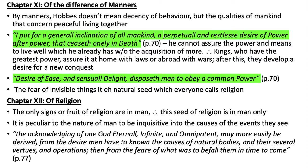This is the chapter on the difference of manners. By manners, Hobbes doesn't mean decency of behaviour, but the qualities of mankind that concern living peacefully together. He writes: 'a general inclination of all mankind is a perpetual and restless desire of power after power that ceases only in death.' He cannot assure the power and means to live well which he already has without the acquisition of more. That's why men always seek more power until they die. Therefore kings, who have the greatest power, assure it at home with laws or abroad with wars, and after this they develop a desire for new conquest.